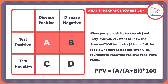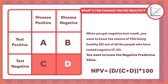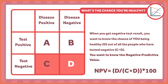But in the real world, you get a positive result and panic — you want to know what's the chance you're sick. Looking at the box, what you want to know is: out of all people with a positive test, A plus B, what's the chance you're sick, or A? This is the positive predictive value — it's A over (A plus B) times 100. Or if you get a negative test and want to know if you're in the clear: out of all people with a negative test, C plus D, what's the chance you're healthy, or D? This is the negative predictive value — it's D over (C plus D) times 100.